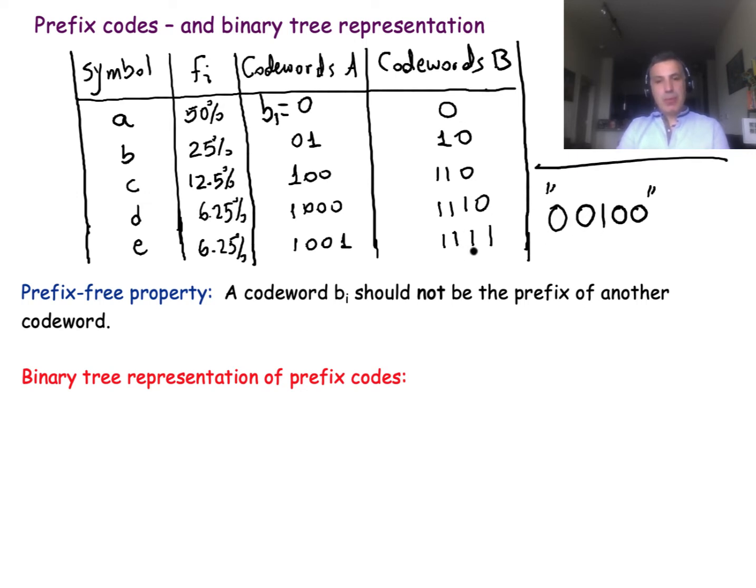With the codewords B, you don't have this issue, because you can tell that the message is A, A, B, and then A. So more generally here, we need to make sure that each codeword B should not be the prefix of another codeword. Here, for instance, the 0 is a prefix of the codeword 0, 1, and the codeword 1, 0, 0 is prefixed to both 1, 0, 0, 0 and 1, 0, 0, 1.